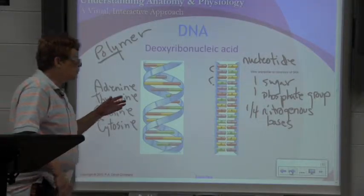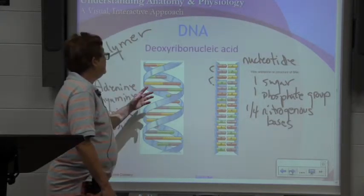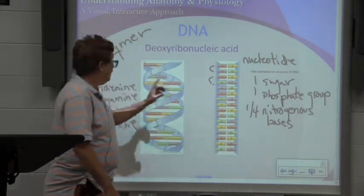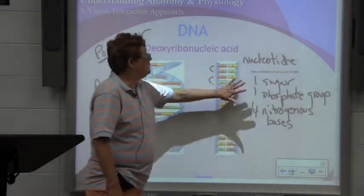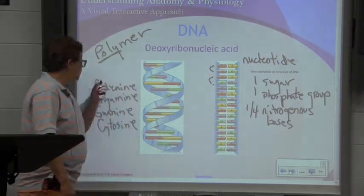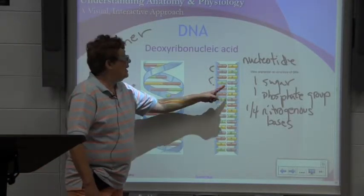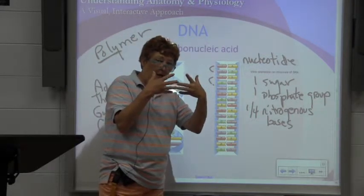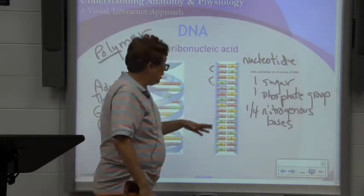Deoxyribonucleic acid (DNA) contains our genetic code. It is shaped as a long string — that's why it's called a polymer — many units connected together. Each one contains a sugar, a phosphate group, and one of four nitrogenous bases: adenine, thymine, guanine, and cytosine. It is how those hook together, the ordering of them, that determines our genetic code.